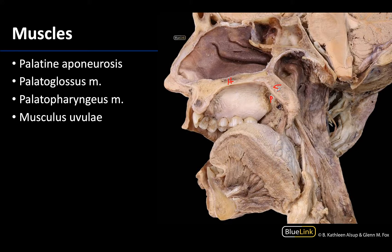In this particular dissection, the mucosa has been removed for these three remaining muscles. If there were still mucosa covering these muscles, this would be referred to as the palatoglossal arch, and this would be the palatopharyngeus arch, but since the mucosa has been removed, we're actually looking at the muscle fibers. The key to identifying these next two is to really focus on the second part of the names of these muscles. The palatoglossus is going to be between the soft palate and the tongue, whereas the palatopharyngeus will extend from the soft palate to the pharynx.